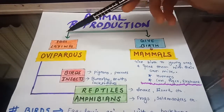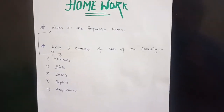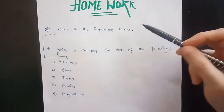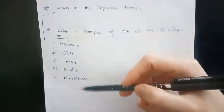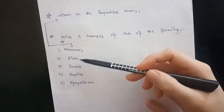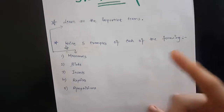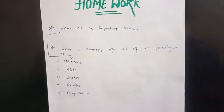That was all about animal reproduction — egg-laying animals and mammals. You have to learn this topic very properly. Your homework: learn all the important terms — birds, insects, reptiles, amphibians, and mammals — and write five examples of each in your rough copy. If you have any problems, let me know in the comment box below.